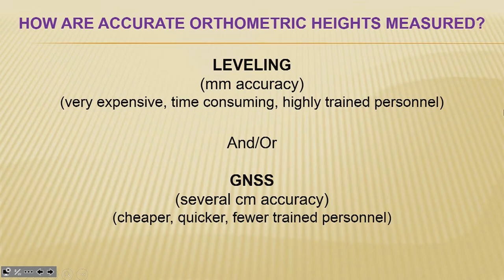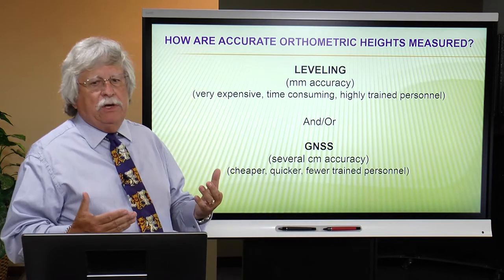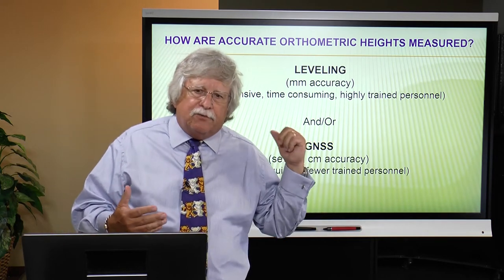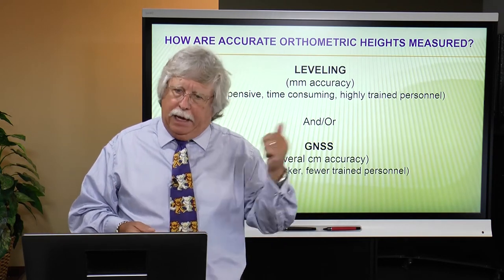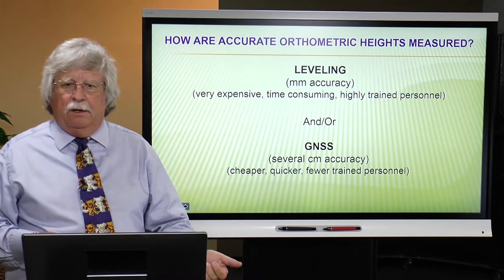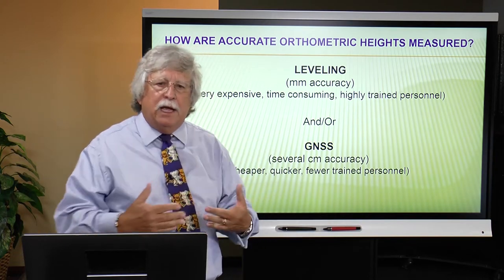If you really have to have the highest level of height integrity, that can only come from leveling. You can fairly easily achieve millimeter height differences with leveling. But as you see, it's very expensive, very time consuming, and requires highly trained personnel. You've got to have people dedicated to this process. On some occasions I've had surveyors refer to geodetic leveling as 'construction leveling done slower' — well, it's not like that at all. It requires a fairly significant investment in technology and, more importantly, trained people.